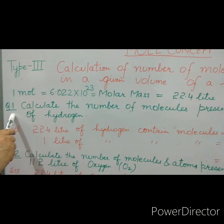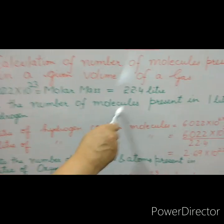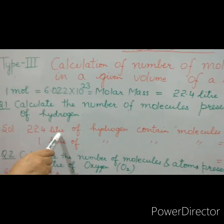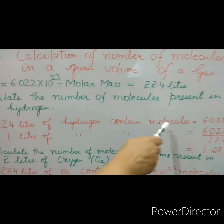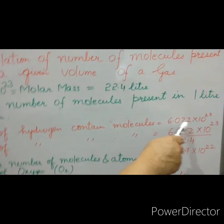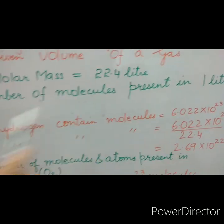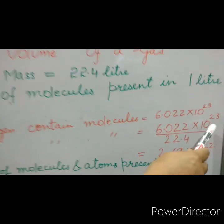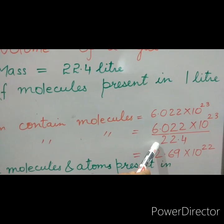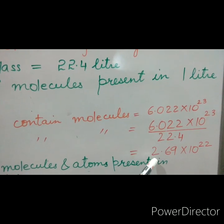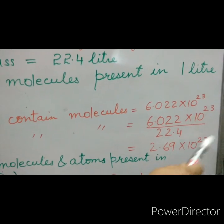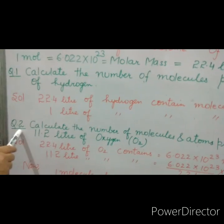First question: calculate the number of molecules present in 1 liter of hydrogen. We know that 22.4 liters of hydrogen contain 6.022 × 10²³ molecules. Then 1 liter of hydrogen will contain 6.022 × 10²³ divided by 22.4, which gives the value 2.69 × 10²².